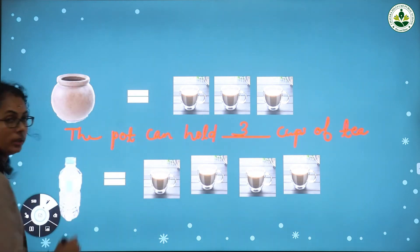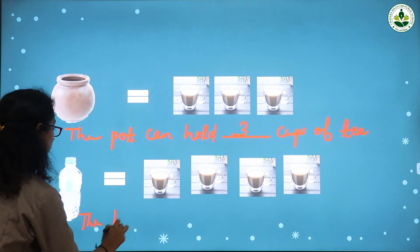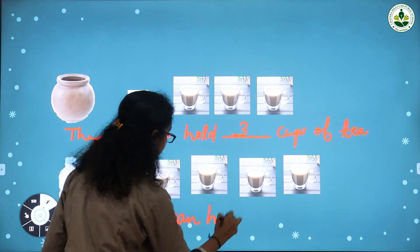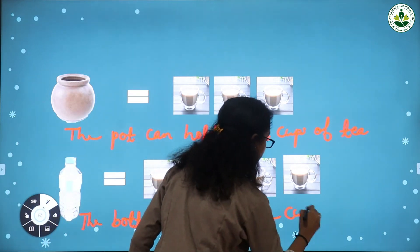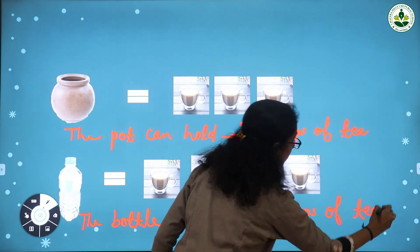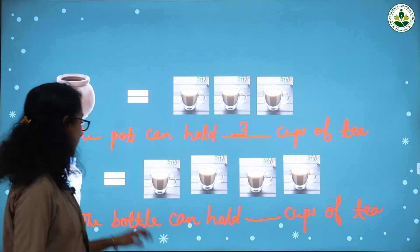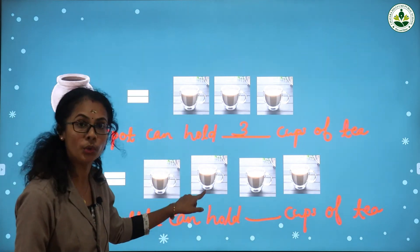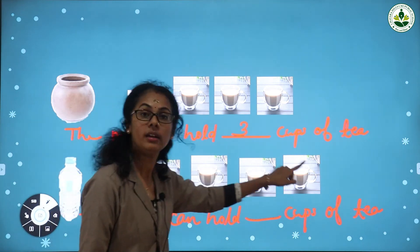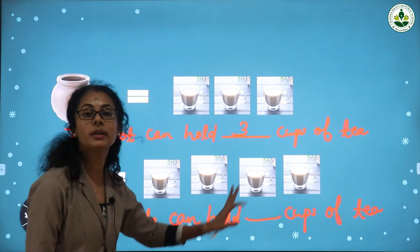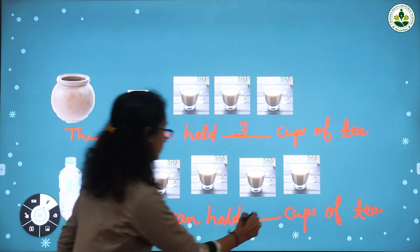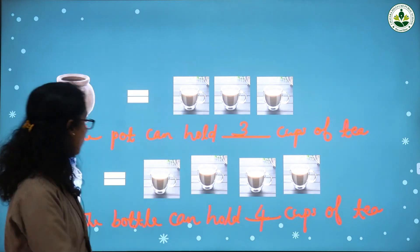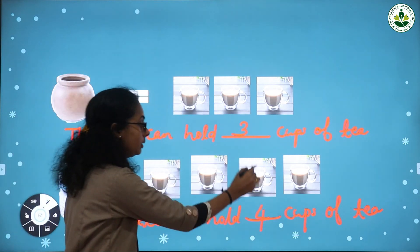The second one is this bottle. This bottle can hold — 1, 2, 3, 4 — how many cups of tea? 4 cups of tea. This bottle can hold 4 cups of tea.